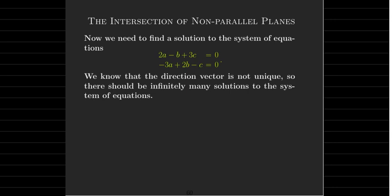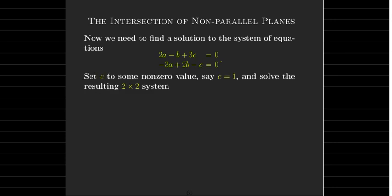So to find a solution—and that's all we need, we just need one solution—we're going to assume that we can set c equal to 1 and solve the resulting 2 by 2 system.